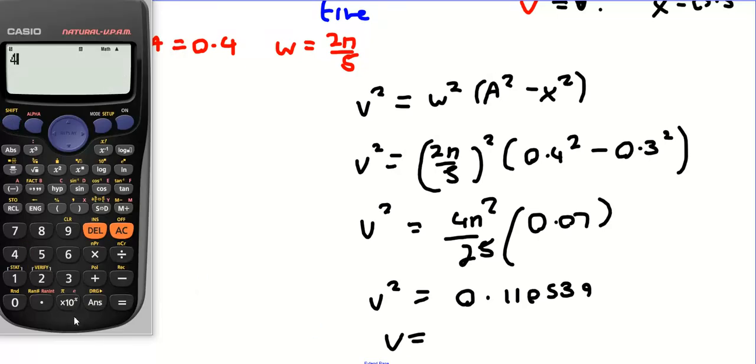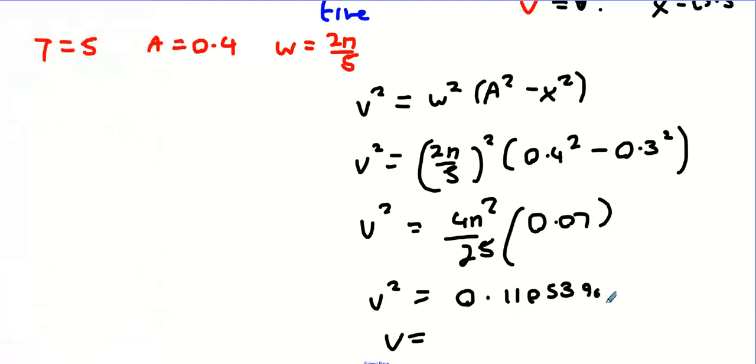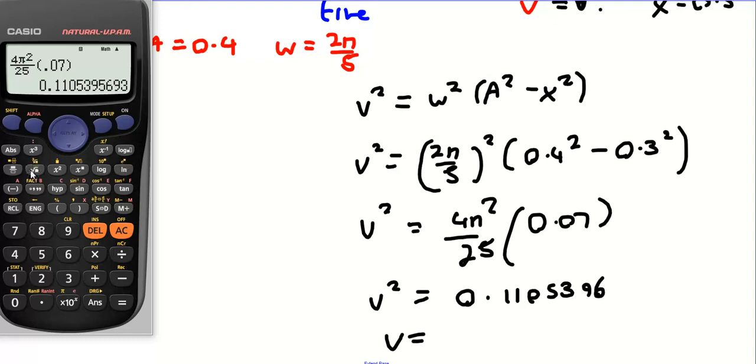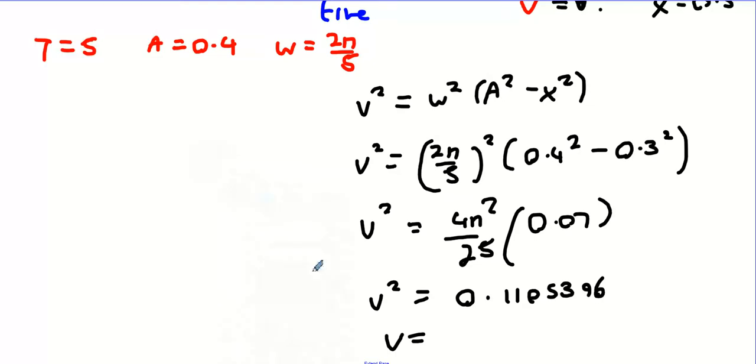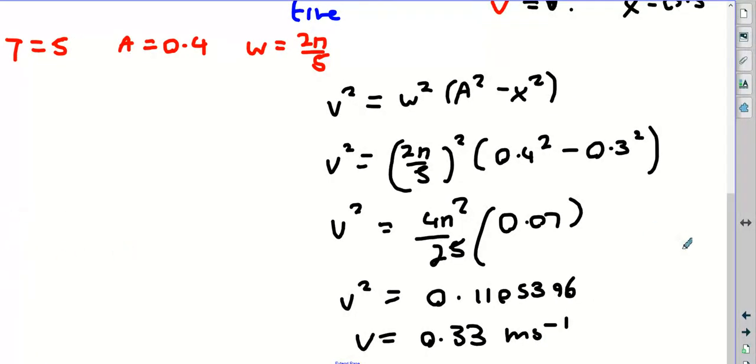Then square root it. Well I do 96 there actually, square root the answer, and you get 0.3325 or 0.33 meters per second. So that is that done.